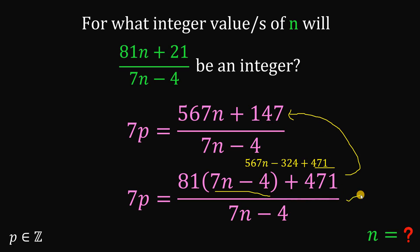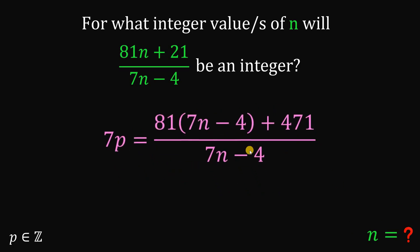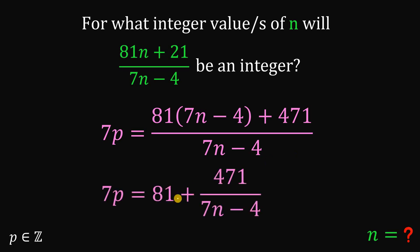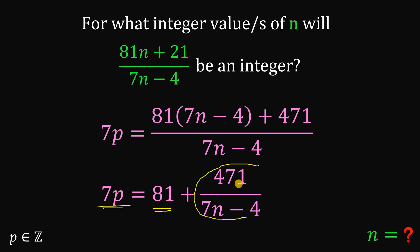Now let's apply the concept of similar fractions. We can rewrite the right-hand side as 81 + 471/(7n - 4). Technically speaking, 81 is an integer for sure, and 7p is also an integer. Therefore, to make this an integer, we need the expression 471/(7n - 4) to also be an integer.